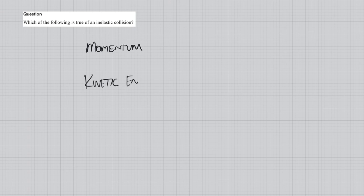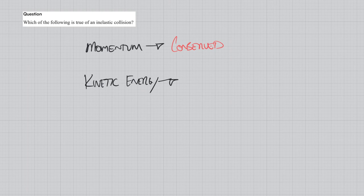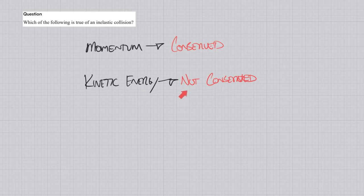This question asks which of the following is true of an inelastic collision. For an inelastic collision, momentum is conserved but kinetic energy is not conserved. For an elastic collision, both momentum and kinetic energy are conserved. So for an inelastic collision, the correct answer is that momentum is conserved but kinetic energy is not.